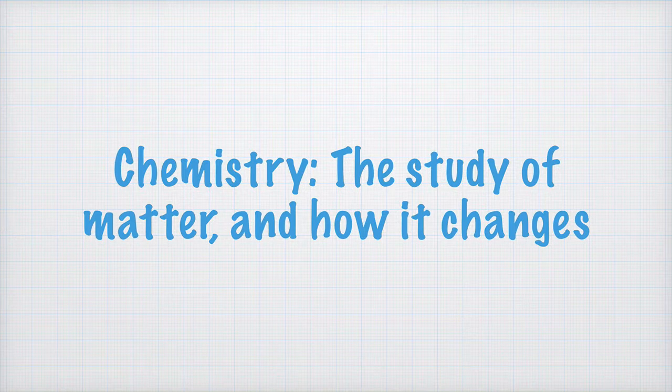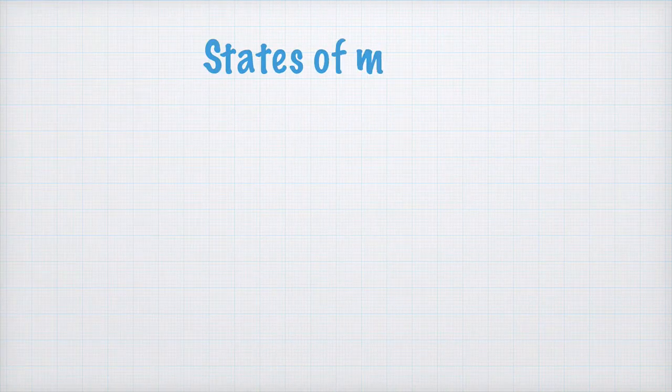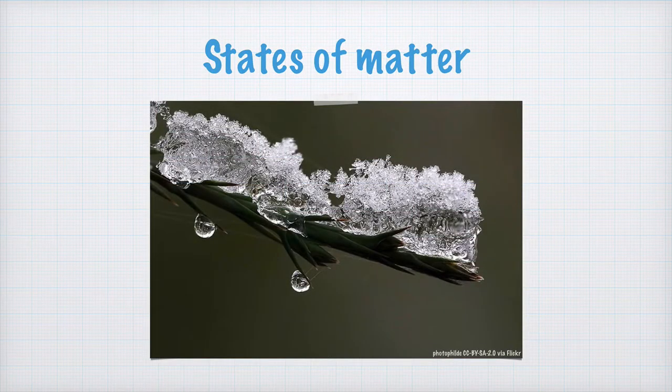Matter may exist in a few different forms too. We call them phases or states of matter. They are normally solid, liquid and gas. As a matter of fact, in this picture of some melting snow, you may see an example of all three of them.